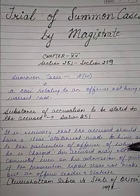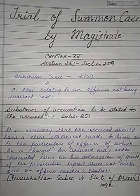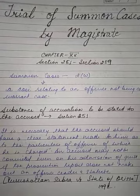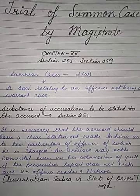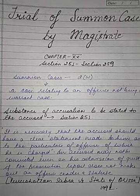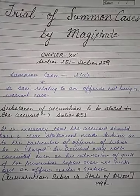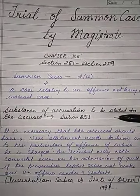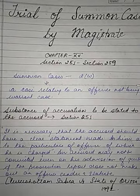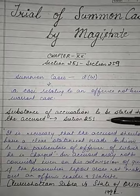We will study the trial of summon cases in six major steps. This will be easy to understand. The first step is: substance of accusation to be stated to the accused. The substance of the accusation must be given under Section 251. In any summon case, when the accused is brought before the magistrate, the particulars of the offense of which he is accused shall be first presented to him.